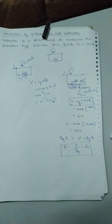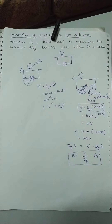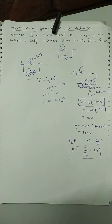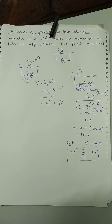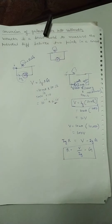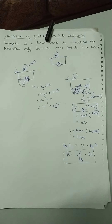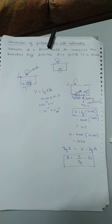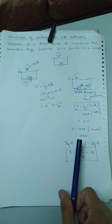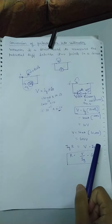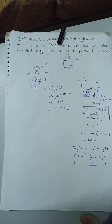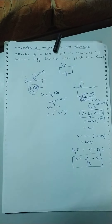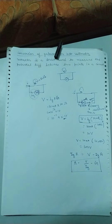Choti-choti baatein yaad rakho: conversion of galvanometer into ammeter ke liye parallel mein shunt resistance — very very small resistance — introduce kiya tha. Jabki galvanometer ko voltmeter mein convert karna hai to series mein high resistance lete hain. Yeh practical mein kai baar puche jaate hain. Hum naya chapter third unit ke completion ke baad online start karenge — students get ready.